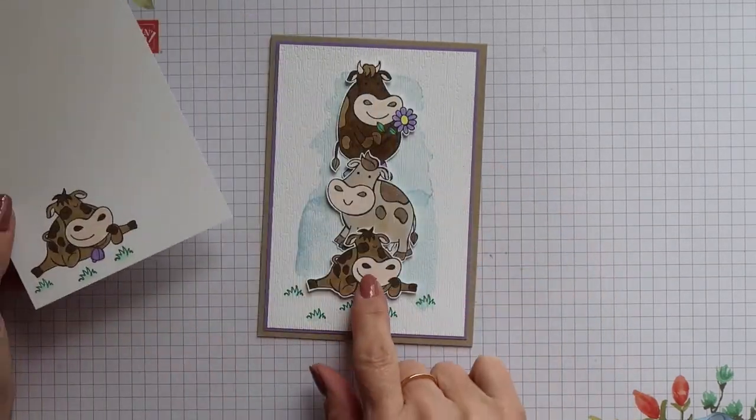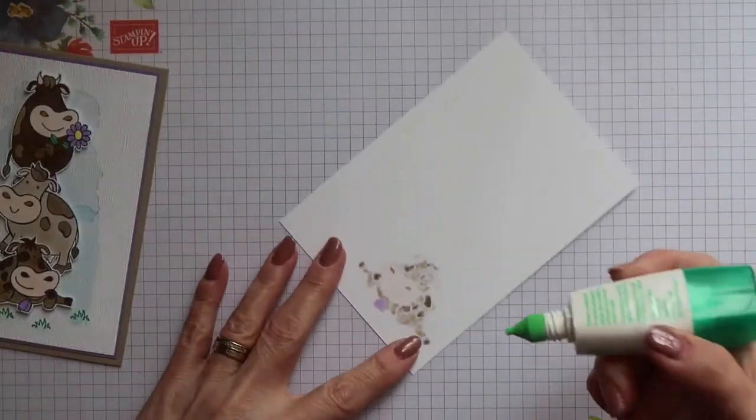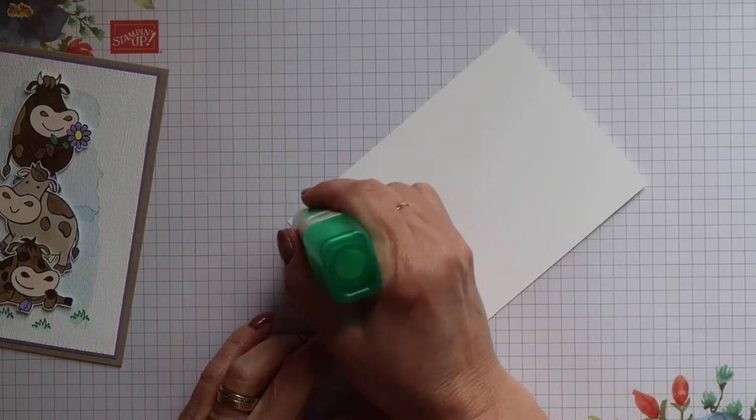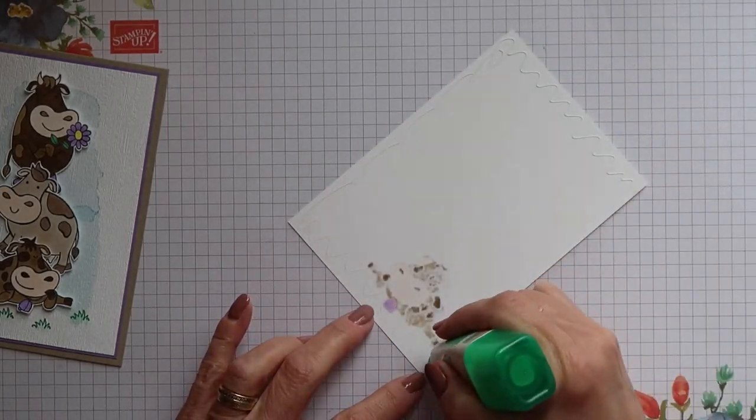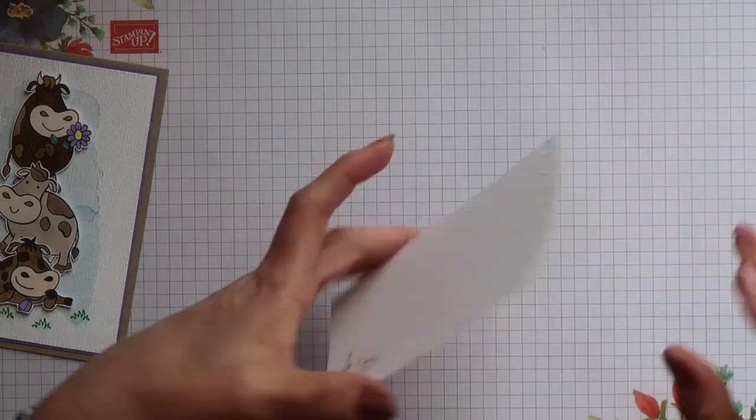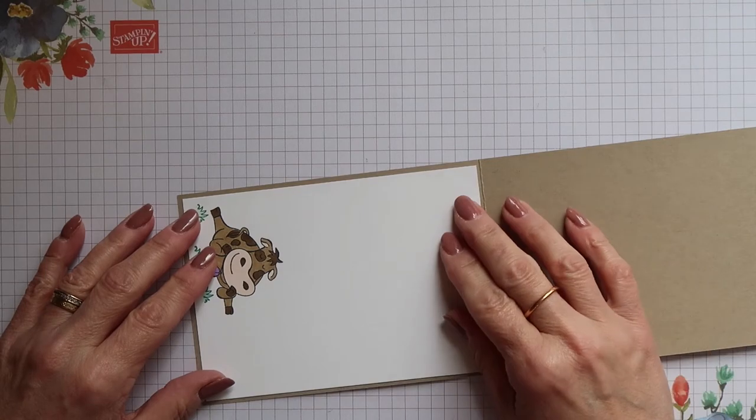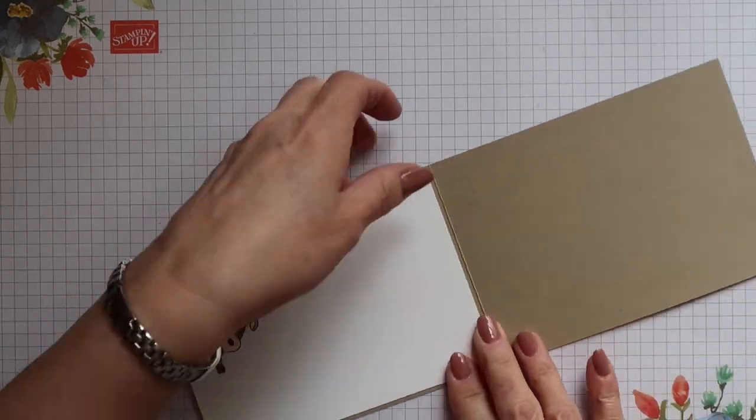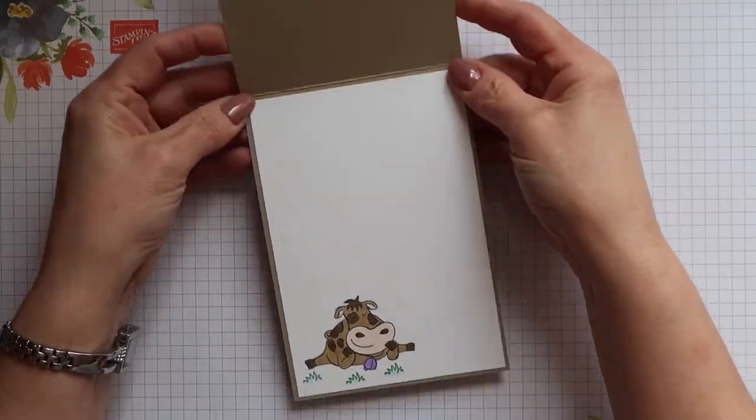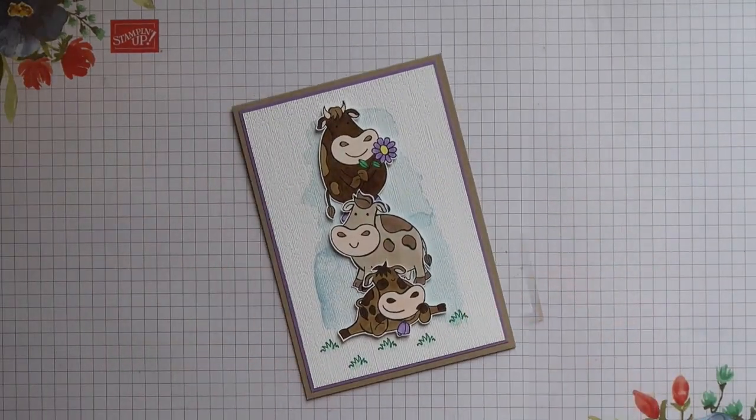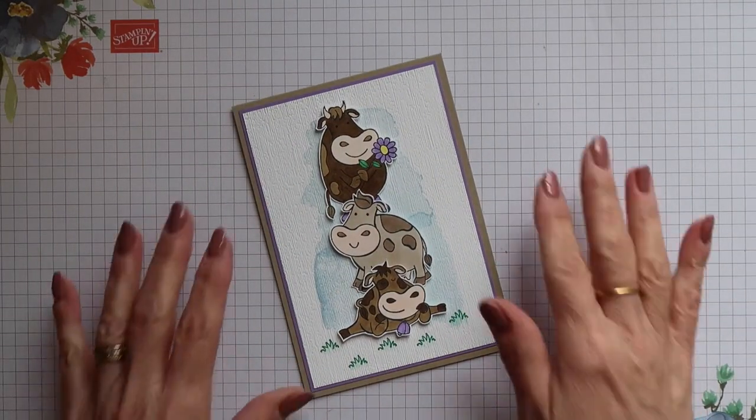I have a Whisper White mat to go inside the card and I've already stamped and colored the image onto there and I colored it in exactly the same way as I showed you previously. So I'm just going to add glue to this and then position it inside the card. And that's it, we're all done.